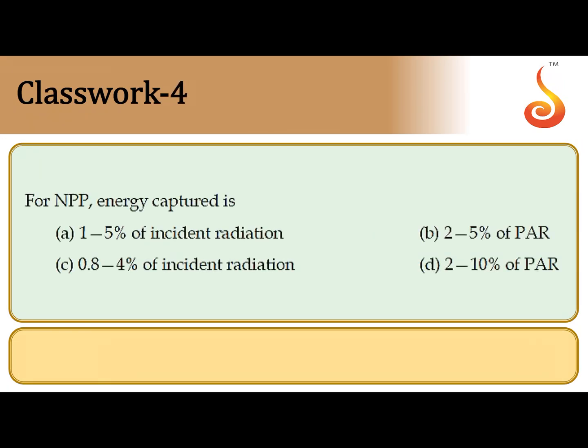The fourth question says: net primary productivity — energy captured. Whenever you think about energy capturing, the only group of organisms along the food chain capable of capturing energy are the green plants, called producers. Producers are known to capture only about one to five percent of incident radiation to prepare their biomass. So the correct answer is option A: one to five percent of incident radiation.